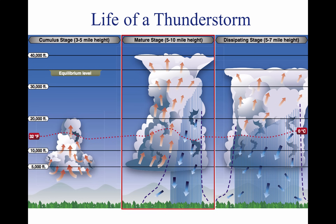The mature stage is the most violent time period of the thunderstorm's life cycle. At this point, drops of moisture, whether rain or ice, are too heavy for the cloud to support and begin falling in the form of rain or hail. This creates a downward motion of the air.